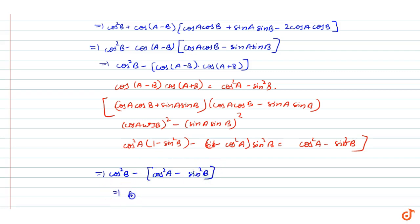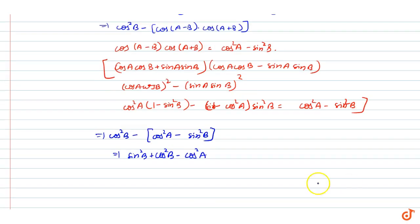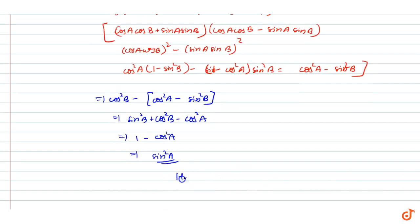This will be sin squared b plus cos squared b minus cos squared a. This will be one minus cos squared a, that is sin squared a. This will be proved. So hence proved. This is our solution.